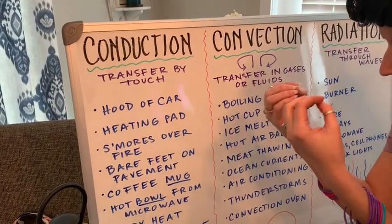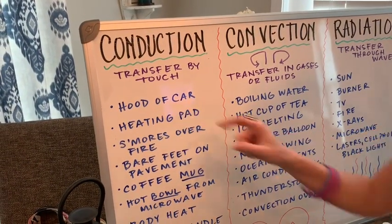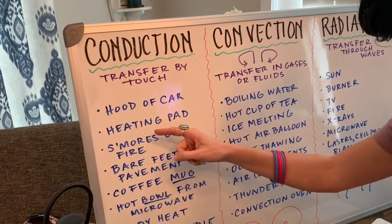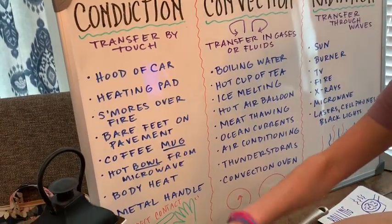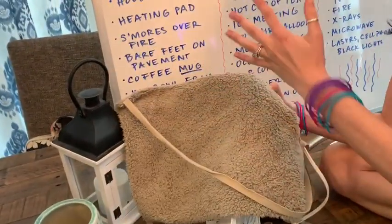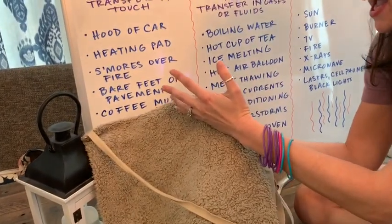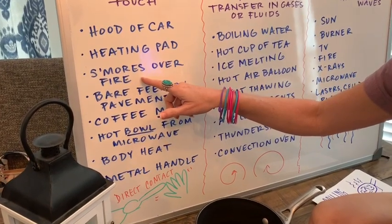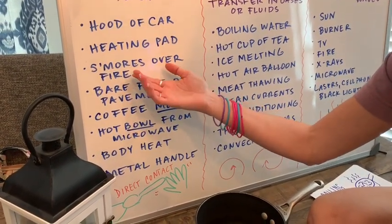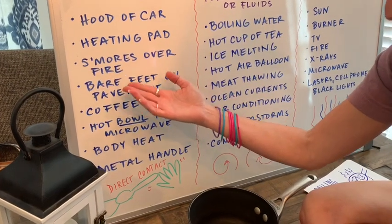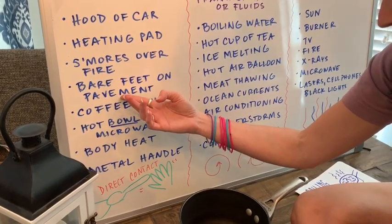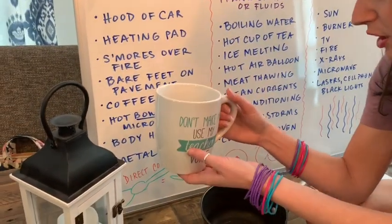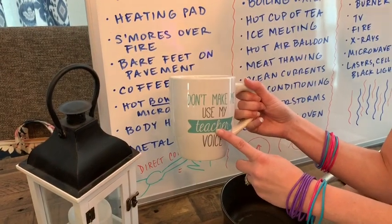Conduction is transfer by touch — it has to make direct contact. Think about the hood of a car in the summer when you touch it, it's super hot. What about a heating pad? You plug this in, you touch it, make direct contact on your back to heat it up. Think about s'mores over a fire — you're making direct contact with the flame to heat your food up.